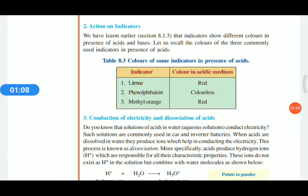Another property is the action on indicators. We already discussed all the actions of acids on indicators. Acid turns litmus to red, phenolphthalein turns colorless, and methyl orange turns red.